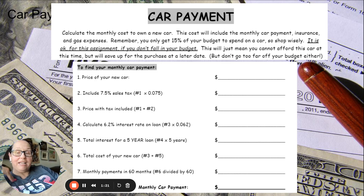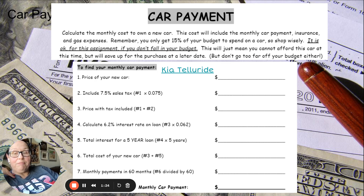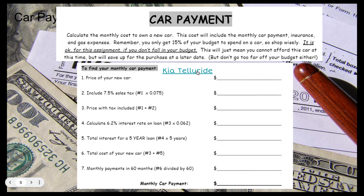I decided — because remember, I have six kids — I'm going to buy a Telluride. So I'm going to buy a Telluride. This is my Telluride, priced at $36,190. Now, by the time we start doing this, that price may change, but when I started the project, that's what it was at.